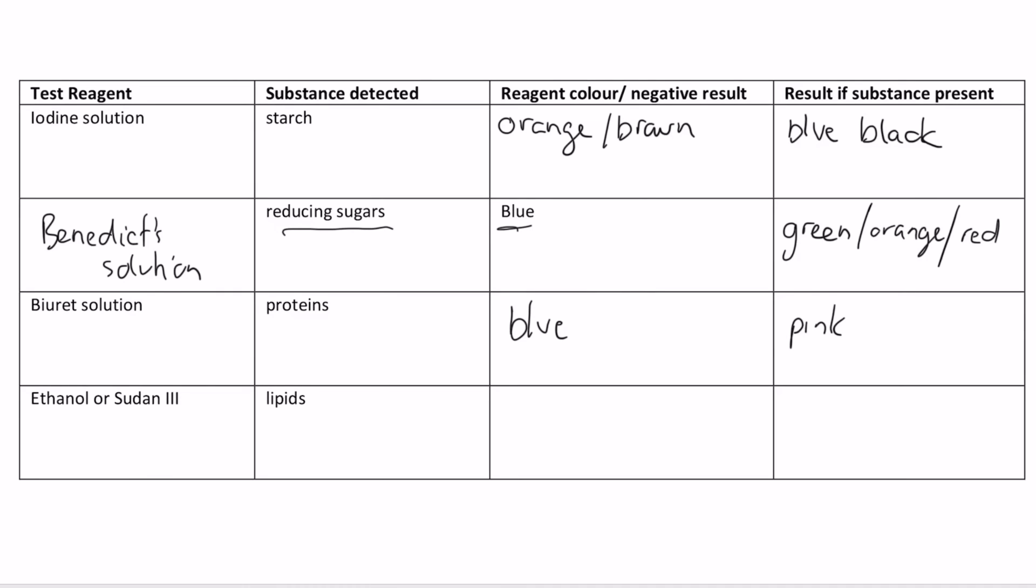Next one we've got: Biuret solution over here. It's a test for proteins. The reagent is blue and it will go a pink or purple color depending on if the protein is present.